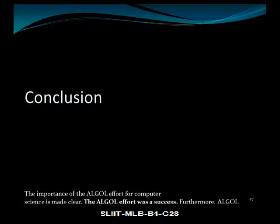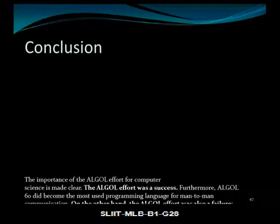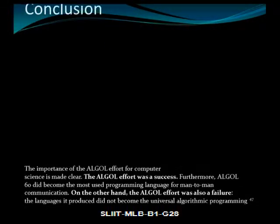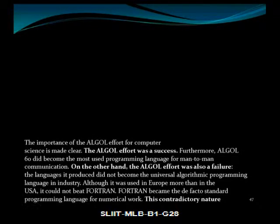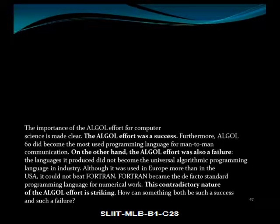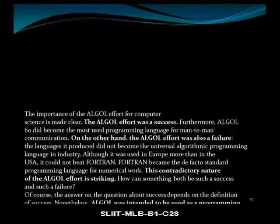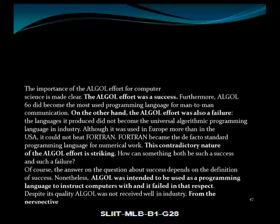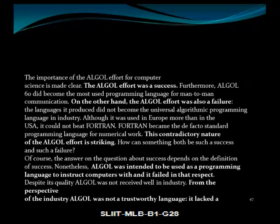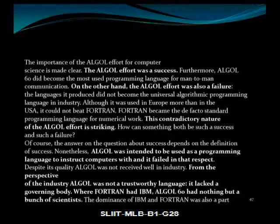ALGOL was used as a formal way to communicate algorithms in the literature for 20 years; now people use ad-hoc pseudocode. The importance of the ALGOL effort for computer science is clear. ALGOL 60 became the most used programming language for man-to-man communication. However, the ALGOL effort was also a failure — the languages it produced did not become the universal algorithmic programming language in the industry. Although it was used more in Europe than in the United States, it could not beat FORTRAN, which became the de facto standard for numerical work.